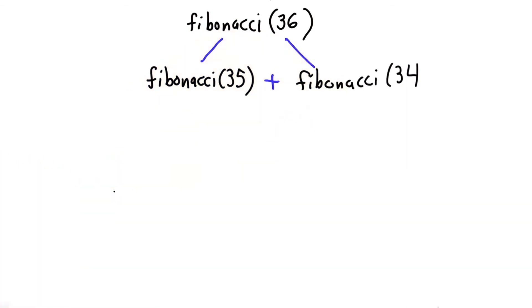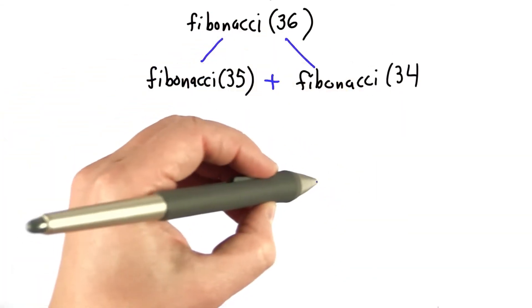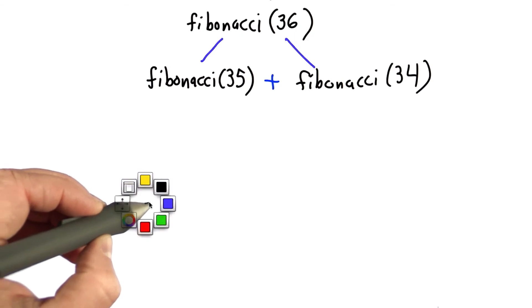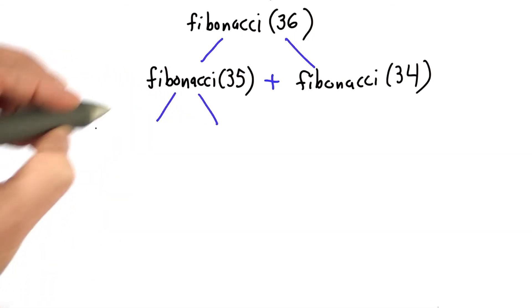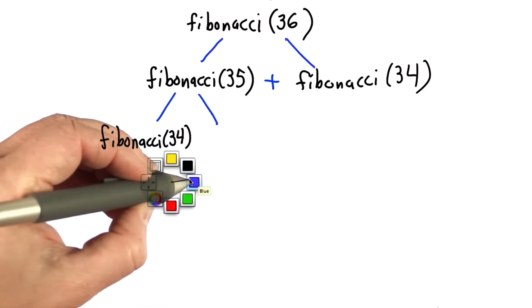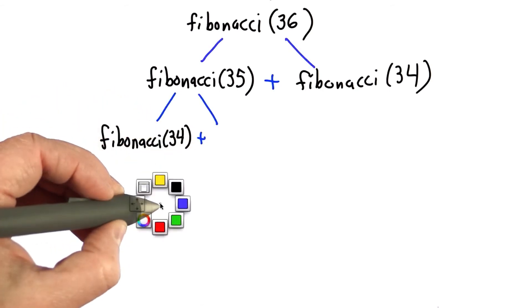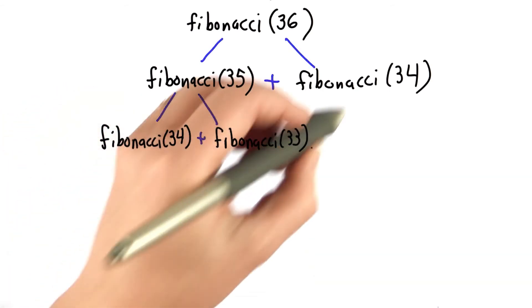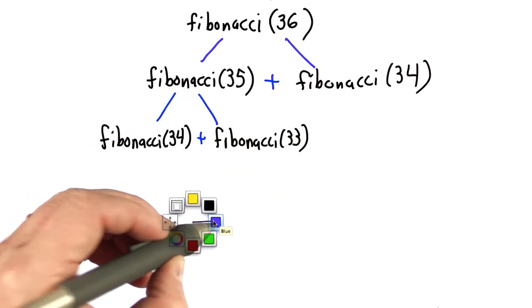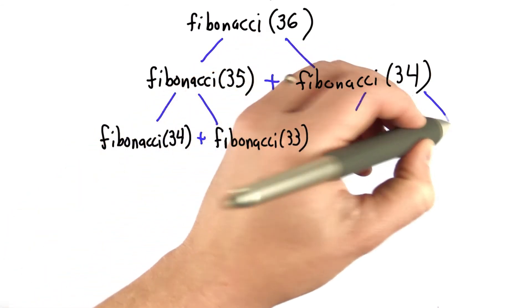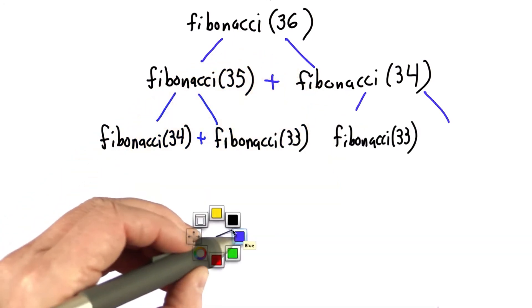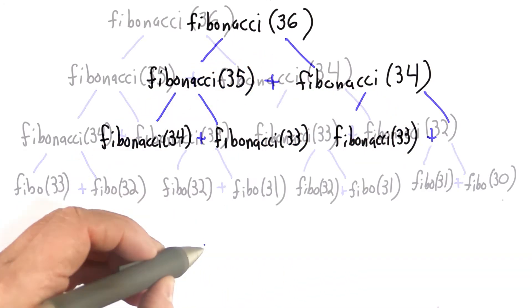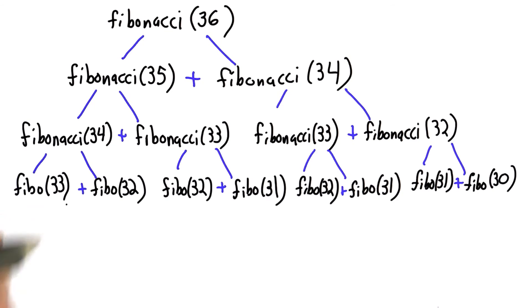Each of those is another call to Fibonacci. So the call to Fibonacci 35, well that will be broken into calling Fibonacci 34 and adding that result to what we get from calling Fibonacci 33. And when we do Fibonacci 34 here, well that's going to be turned into calling Fibonacci 33 and adding the result to Fibonacci 32. Okay, so I think you get the idea.